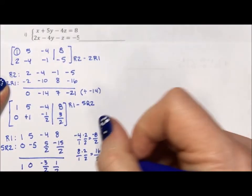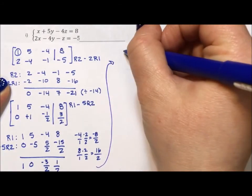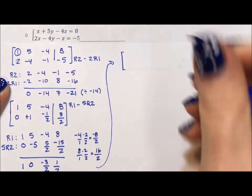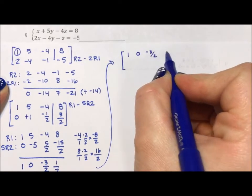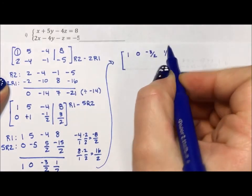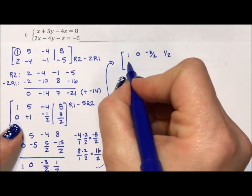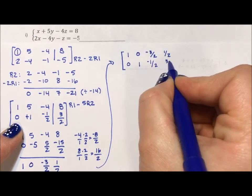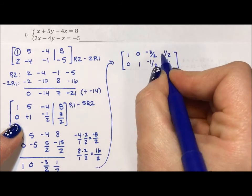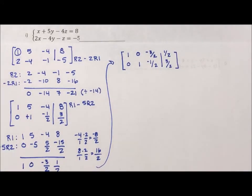So coming back up here, my new matrix is going to be, my first row is going to be 1, 0, negative 3 halves, 1 half. My second row is going to be 0, 1, negative 1 half, 3 halves. And we put our line in for our augmented matrix.